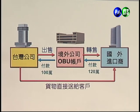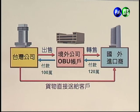接下來以圖卡說明進出口廠商如何運用境外公司與OBU帳戶。以出口商為例：台灣的公司把貨賣給自己的境外公司，收取一百萬；境外公司再轉售給國外進口商，收取一百二十萬。在稅法上，台灣公司的貨款只有一百萬，如果沒有透過境外公司則為一百二十萬，差額二十萬的利潤便留在境外OBU公司，達到節稅效果。